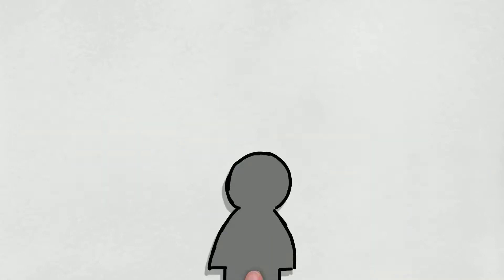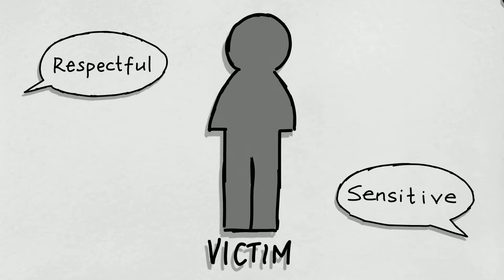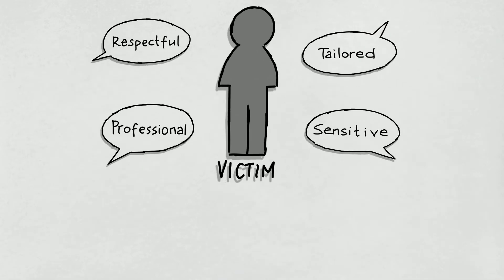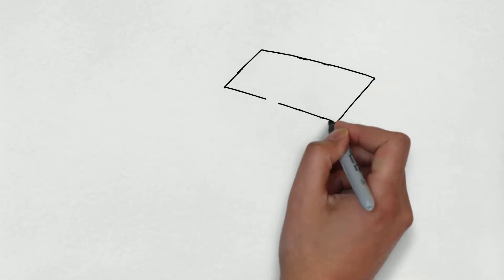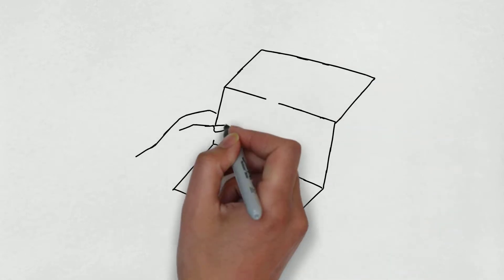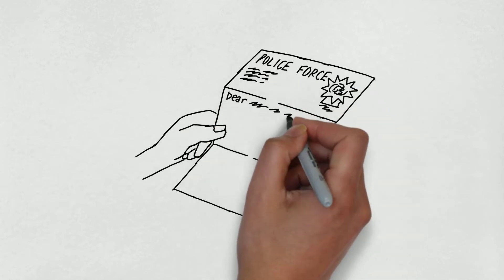The VCOP states that victims of crime should be treated in a respectful, sensitive, tailored and professional manner without discrimination of any kind. They should receive appropriate support to help them, as far as possible, to cope and recover and be protected from re-victimisation.